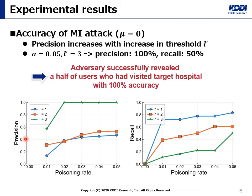This graph shows the experimental results. The horizontal axis shows the poisoning rate, whereas the vertical axis shows precision and recall. Our inference attack is a realistic and possible threat for actual recommendation systems. For instance, when poisoning rate alpha was 0.05 and threshold L' was 3, we achieved 100% precision and approximately 50% recall. This means the adversary successfully revealed half of the users who had visited hospitals with 100% accuracy. Both the precision and recall increase with an increase in the number of malicious users. In addition, there is a trade-off between precision and recall, which can be controlled by changing the threshold L'.